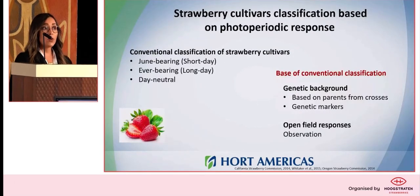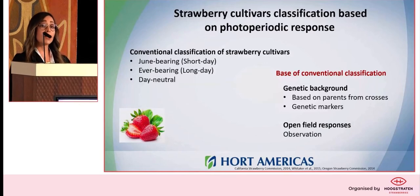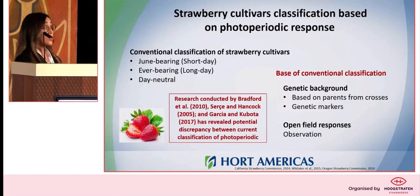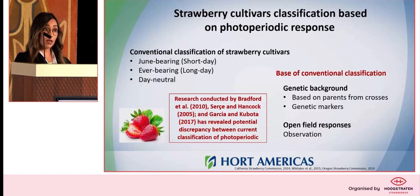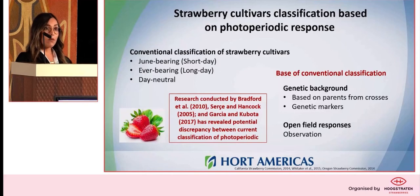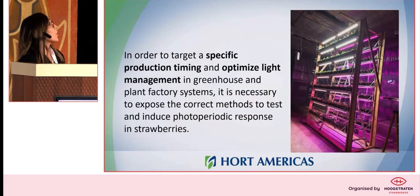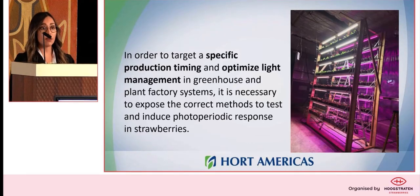We have many cultivars of strawberry that are already classified, but the classification was made just based on open field performance and genetic background. Now we know there is evidence that some of the classifications, studied inside greenhouses with more attention to environmental variables, show that some plants don't have the photoperiodic response they were supposed to have. So in order to target specific production timing and optimize the use of lighting in plant factories, we really need to understand how to trigger flowering in strawberry.